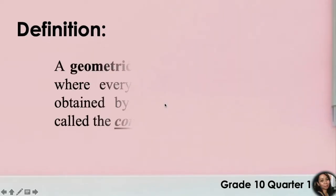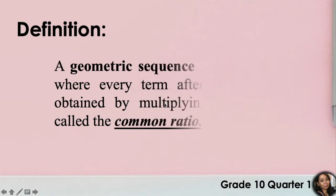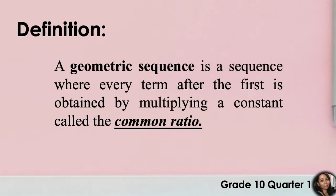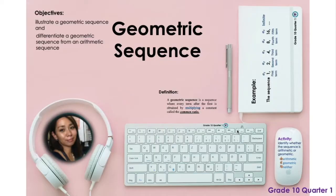A geometric sequence or geometric progression is a sequence where every term after the first is obtained by multiplying a constant called the common ratio. We will be multiplying a constant to get the next term. To further understand, let's have this example.